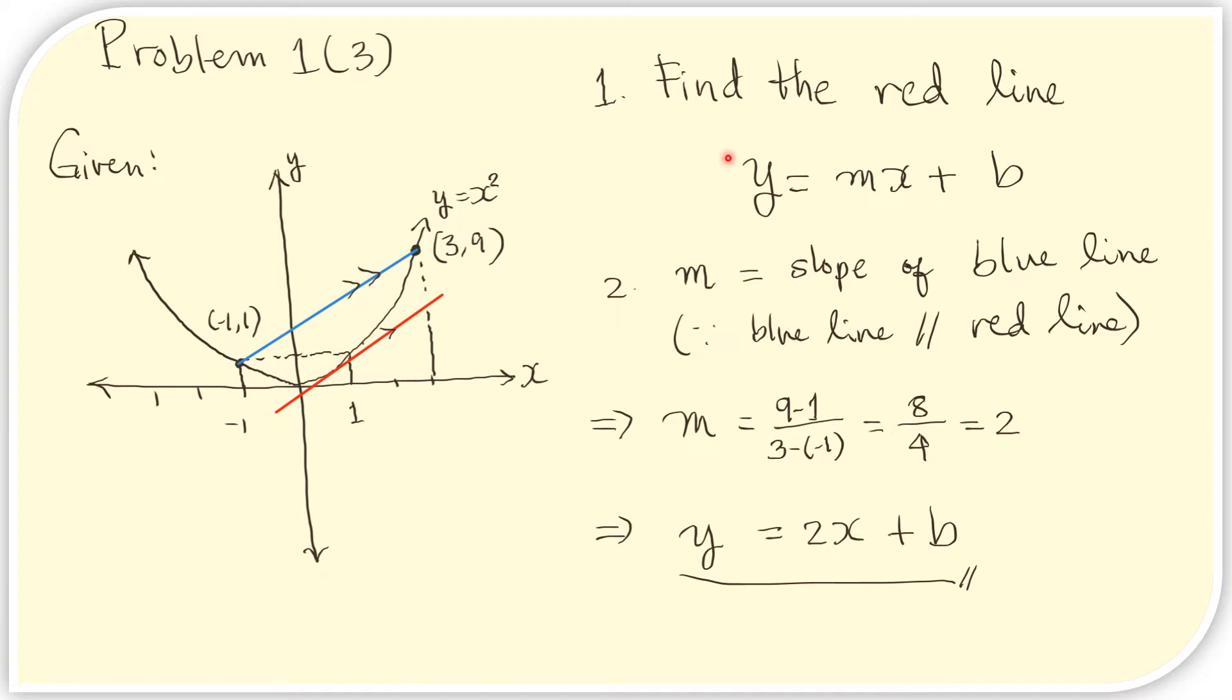So first, we need to find the equation of the red line. That is what we are looking for. And to do that, let us write the slope intercept form. So this is the slope intercept form of the line that is red here. So we need to find m and b.